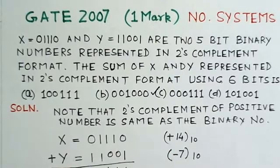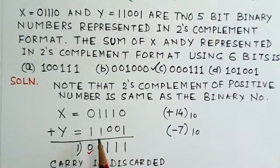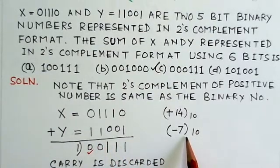And Y here, if we notice, the number Y is having an MSB of 1, so it is a negative number. So we can find this number is minus 7.